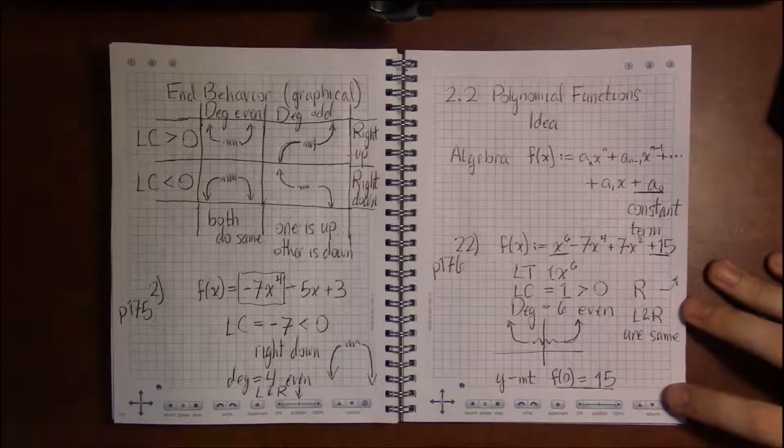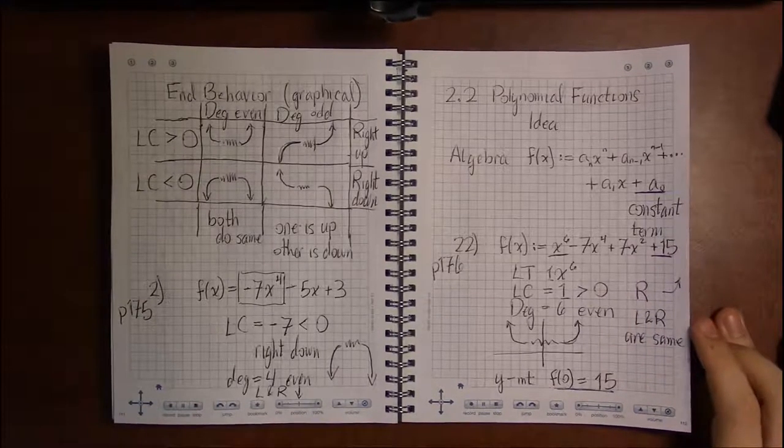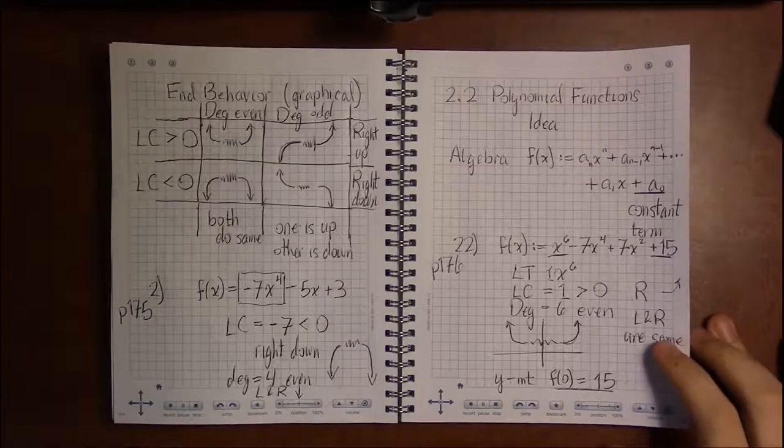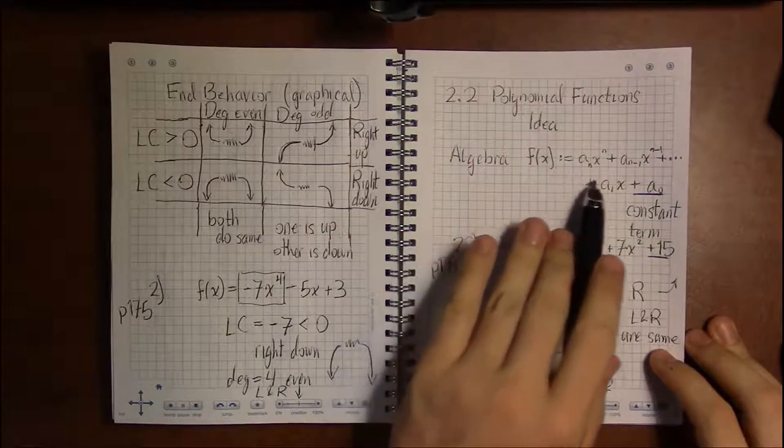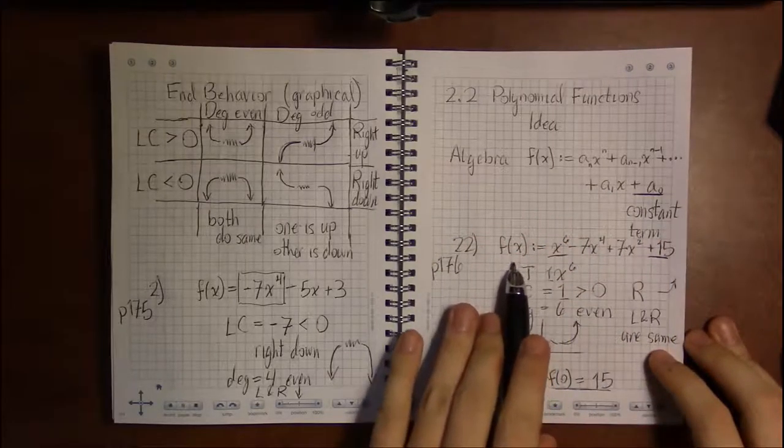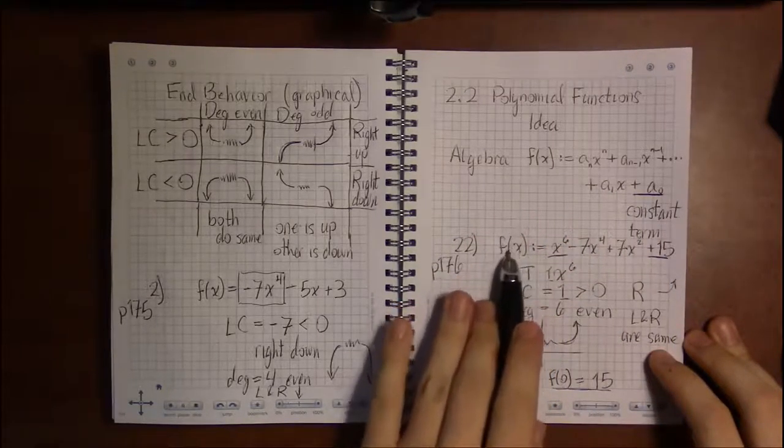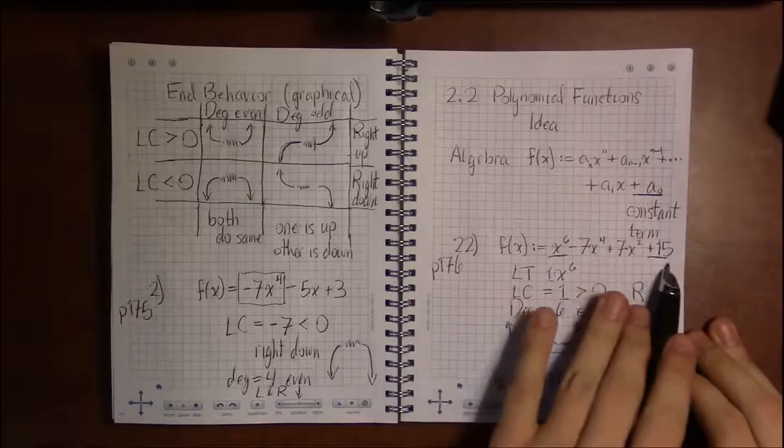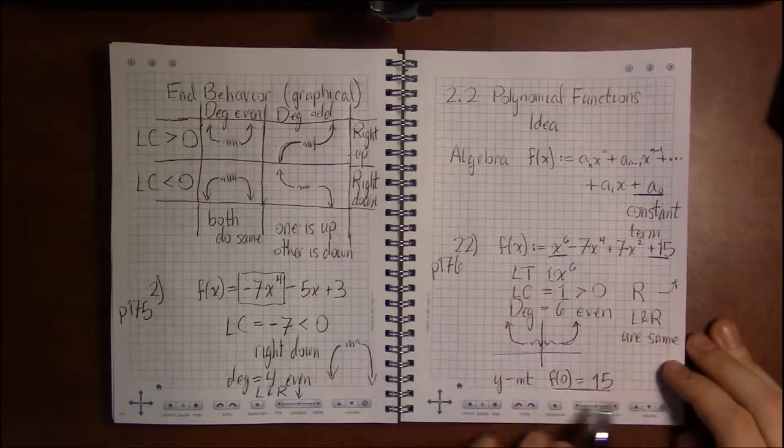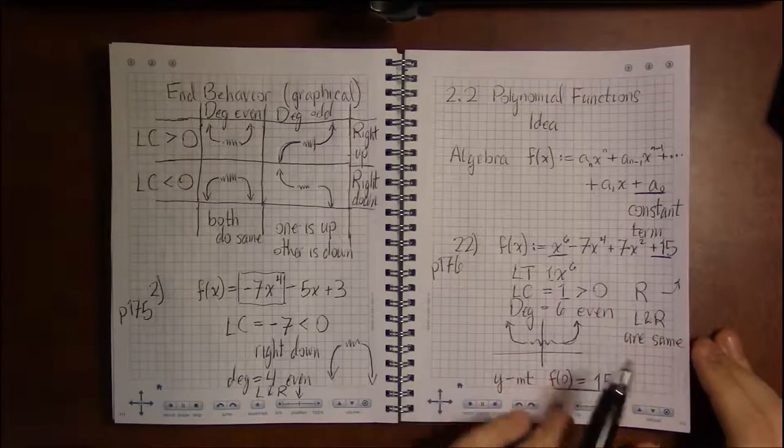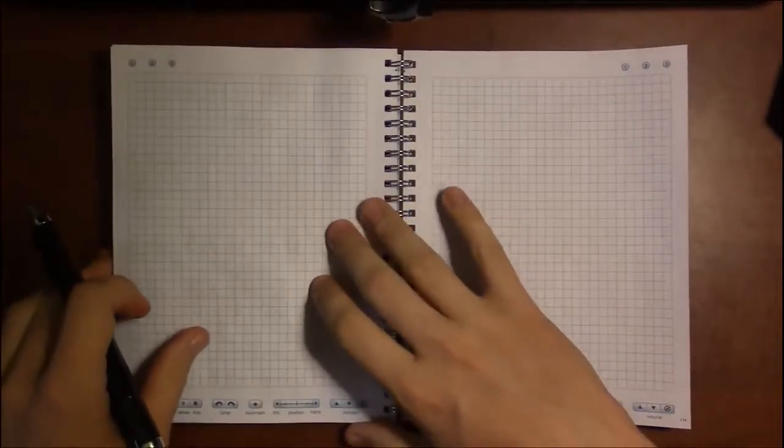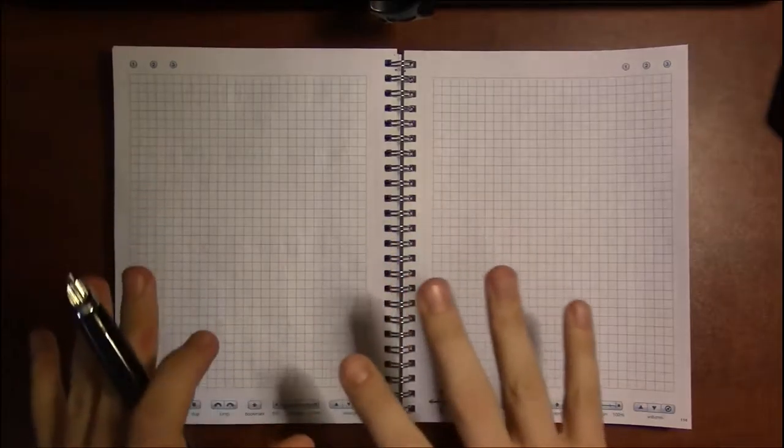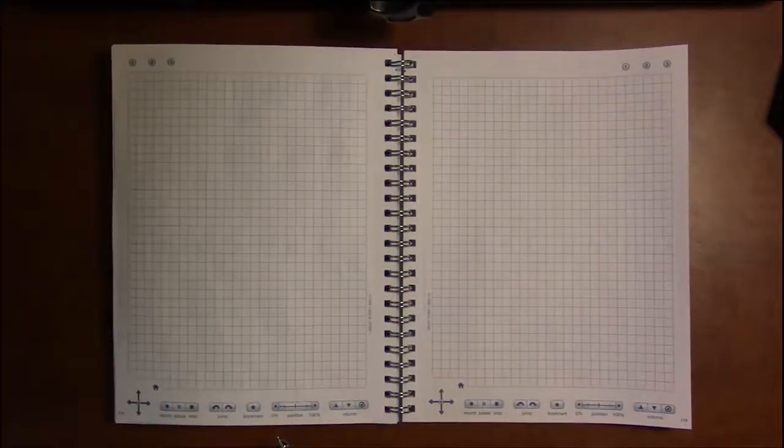So y-intercepts are really very easy. The difficult part are the x-intercepts, where you set y equal to 0 and solve for x. That's a much more difficult problem, and we'll get into that in later sections. But for now, let's just work with really nice factored forms of polynomials.